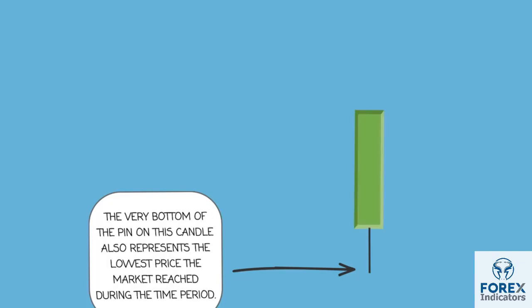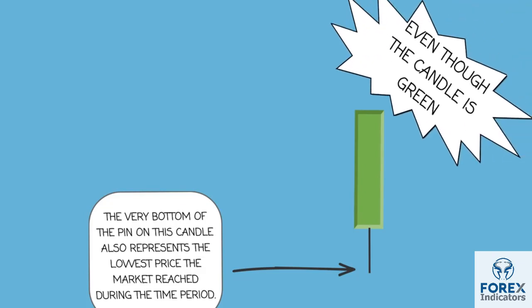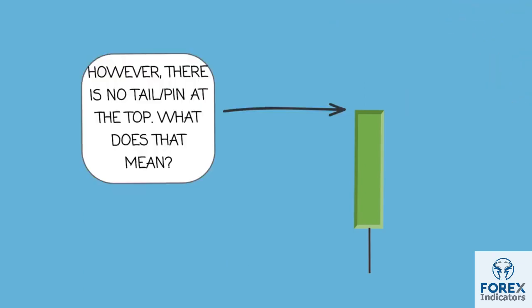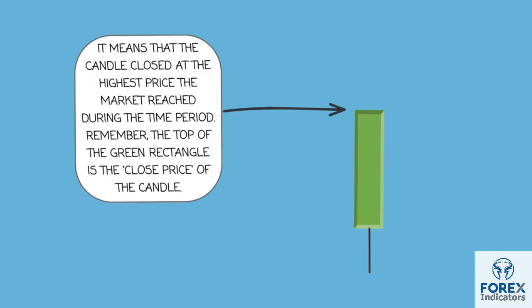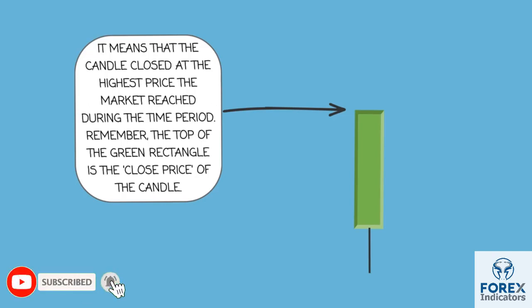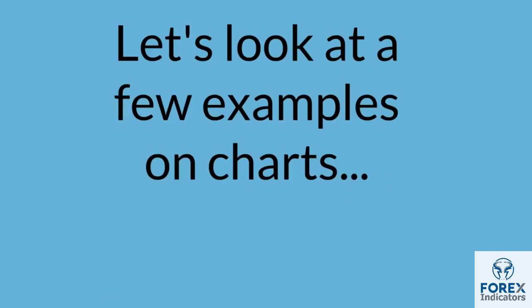The very bottom of the pin on this candle represents the lowest price the market reached during the time period. However, there is no tail or pin at the top — what does that mean? It means that the candle closed at the highest price the market reached during the time period. Remember, the top of the green rectangle is the close price of the candle. Let's look at a few examples on charts.